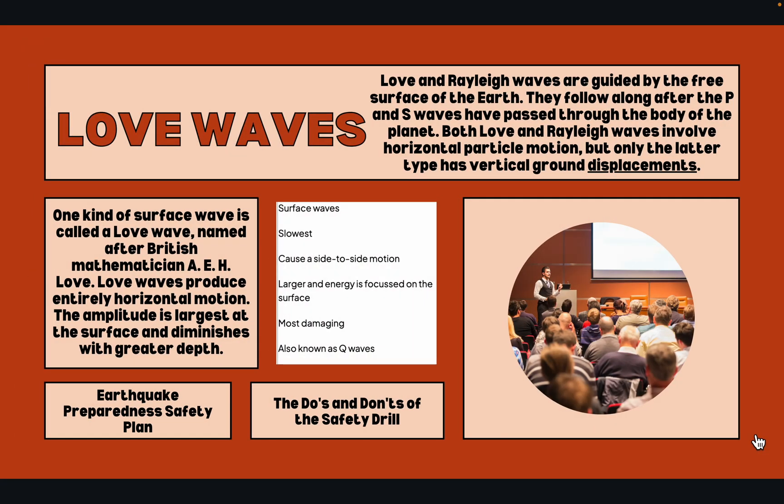Love and Rayleigh waves are guided by the free surface of the Earth. They follow along after the P and S waves have passed through the body of the planet. Both Love and Rayleigh waves involve horizontal particle motion, but only the Rayleigh type has vertical ground displacements.